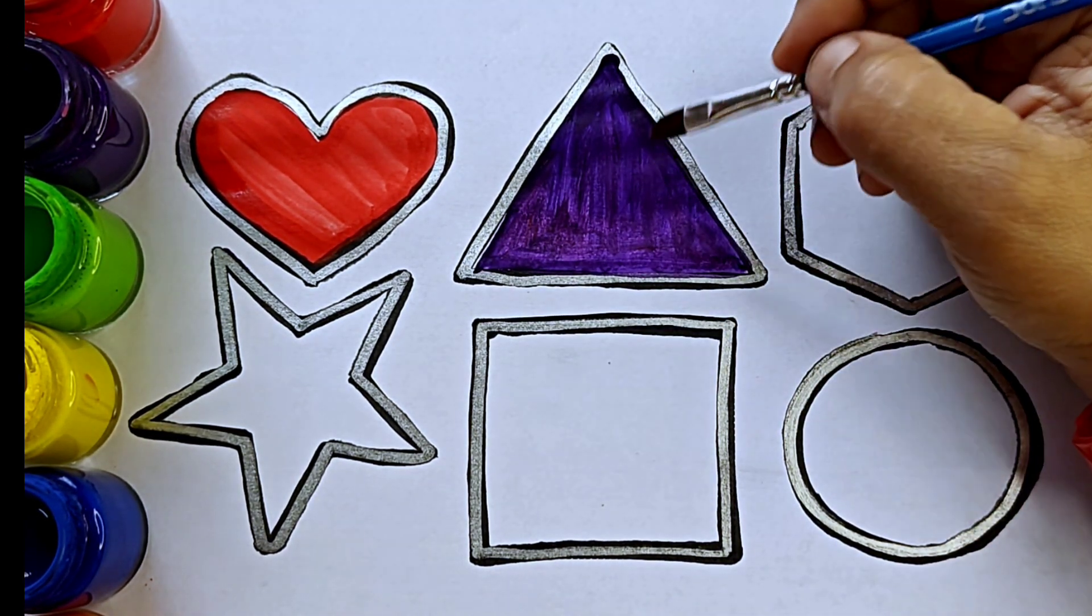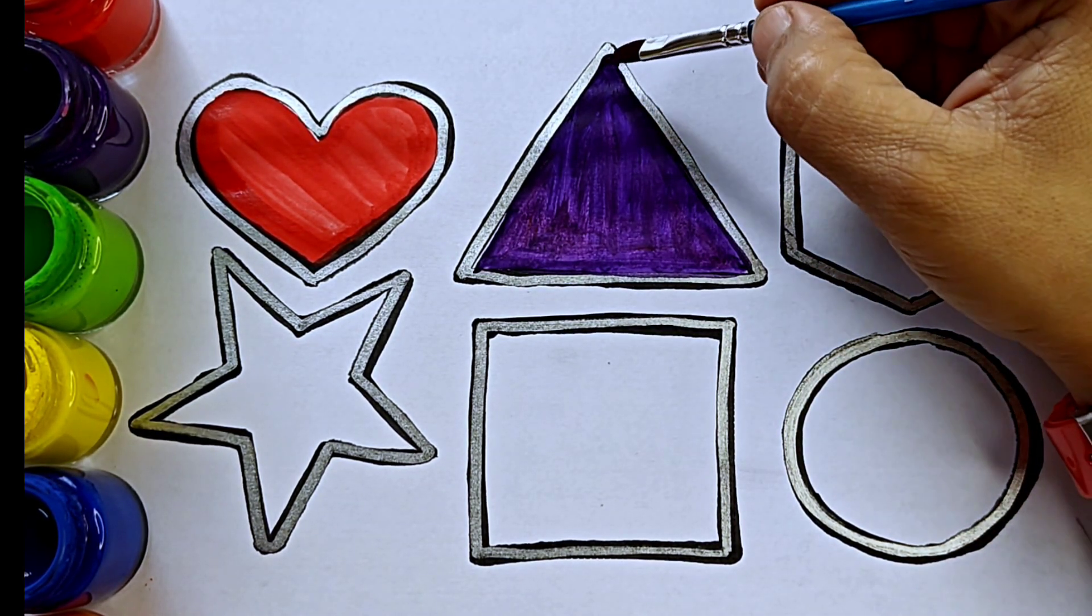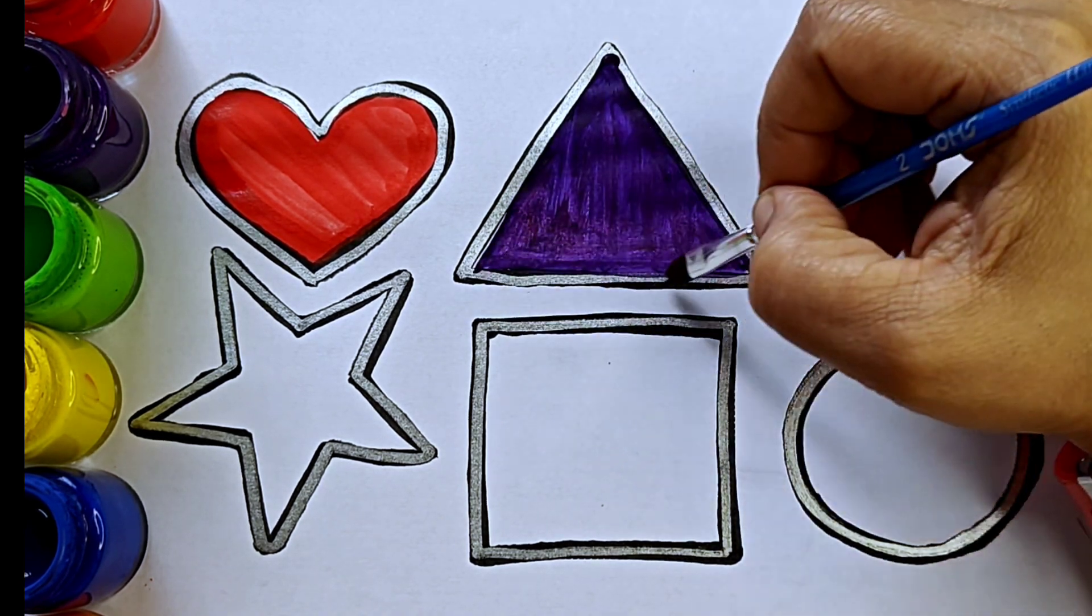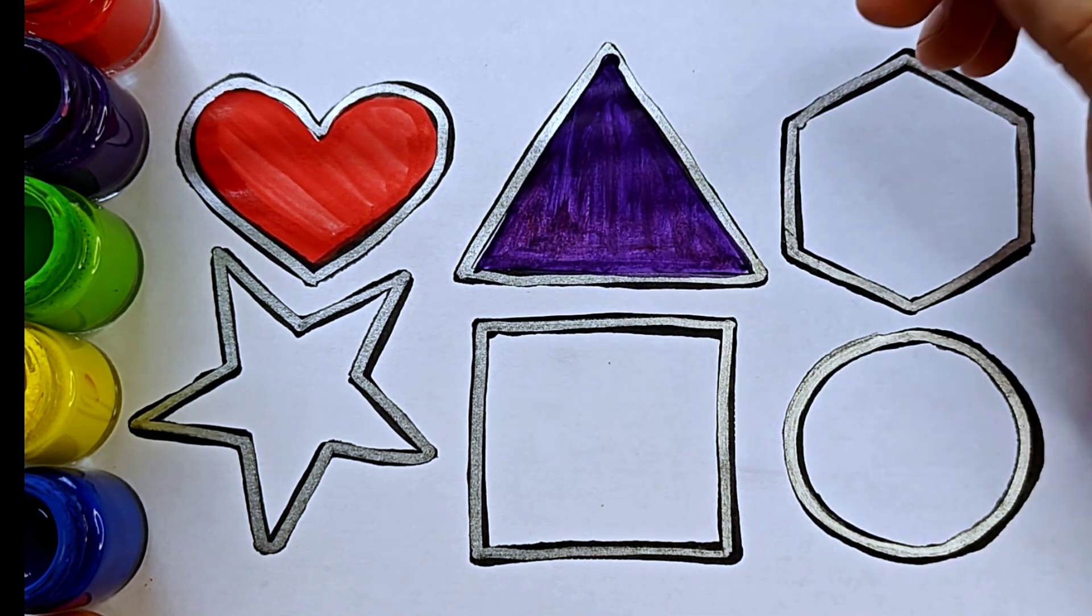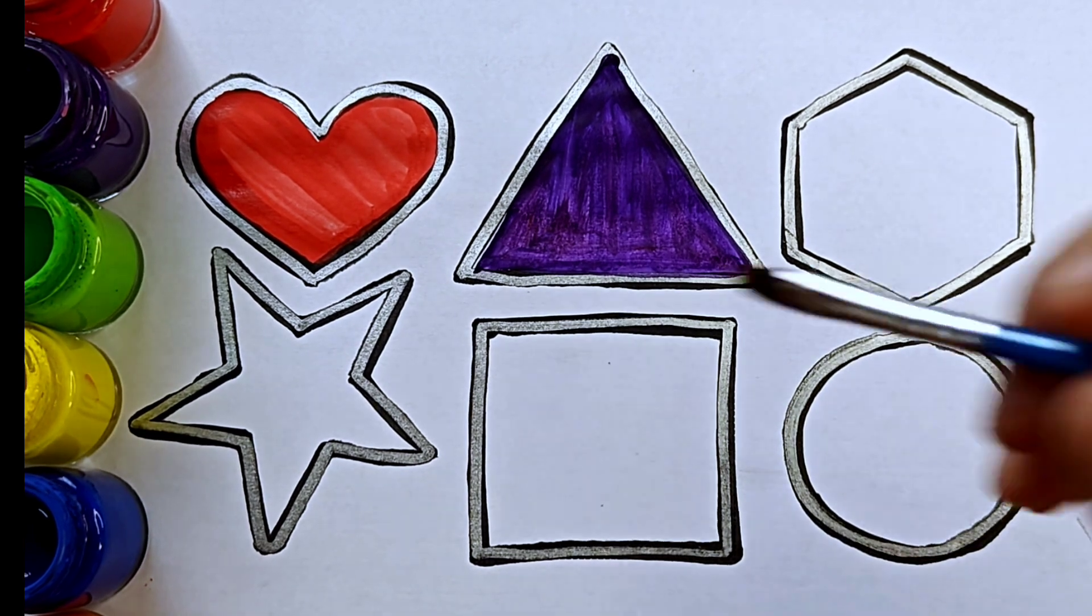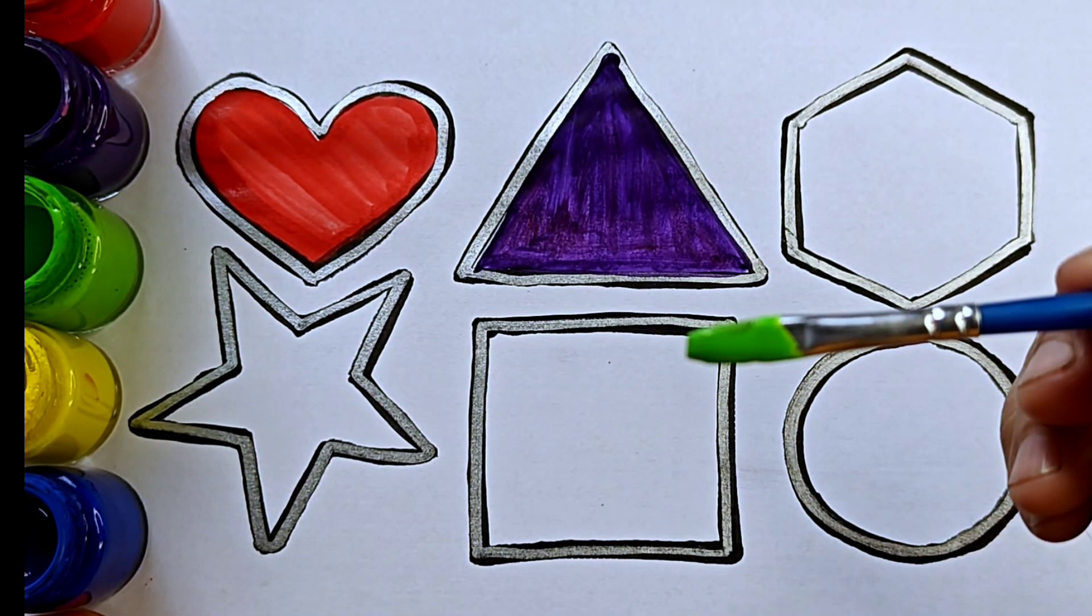This is equilateral triangle. It has three sides, one, two, three. All sides are equal. Green color.